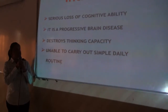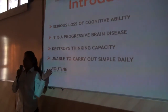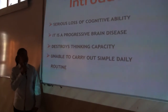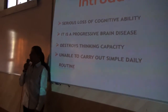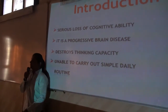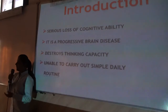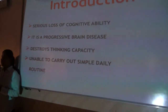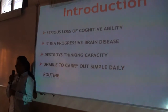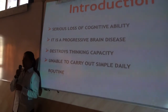With Alzheimer's, the person is unable to carry out the simple tasks of daily living, and it destroys the thinking capacity of the brain. It is a progressive brain disease mainly caused by small structures known as tangles and plaques. The plaques are small crystals made up of the protein beta-amyloid, and the tangles are small crystals made up of the protein tau.